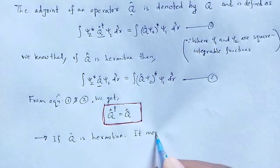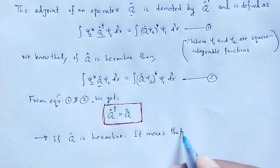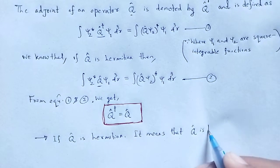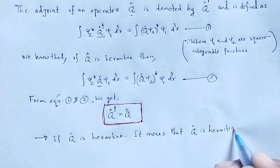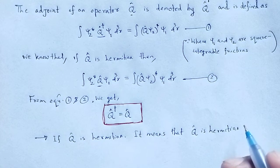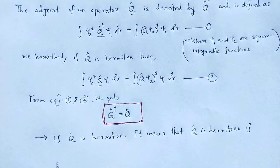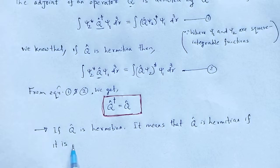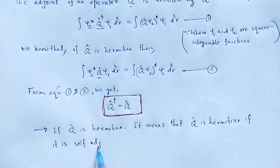It means that Q-cap is Hermitian if it is self-adjoint.